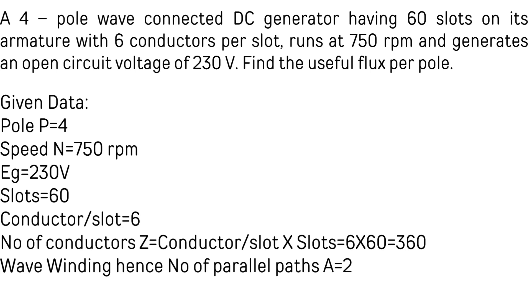In this video we will discuss problems on DC machines and three-phase induction motors. Consider problem: a 4-pole wave-connected DC generator having 60 slots on its armature with six conductors per slot runs at 750 rpm and generates an open circuit voltage of 230 volts. Find the useful flux per pole.